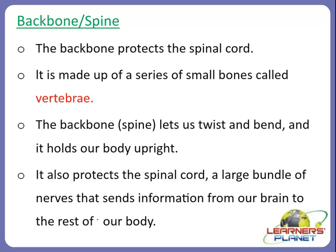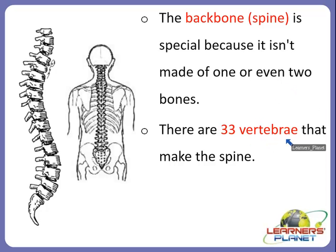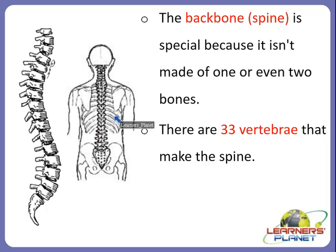The backbone or spine is very special because it is not made up of one or even two bones - there are 33 vertebrae, meaning 33 small bones that make up the spine. The rib cage and ribs including the floating ribs are attached to the backbone, and together they are able to protect the spinal cord, which sends information from our brain to the rest of the body.